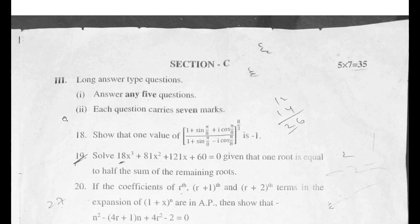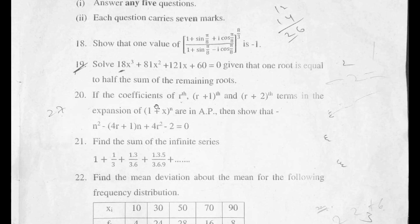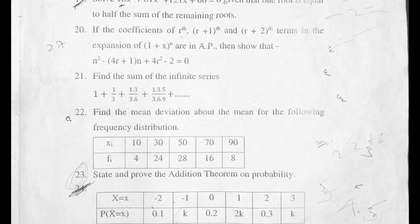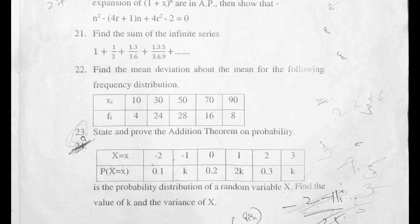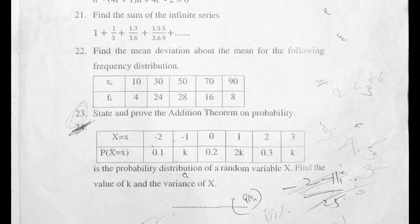Section C has seven LAQs out of which you have to answer any five. The first LAQ is from Chapter 2 De Moivre's Theorem, the second LAQ is from Chapter 4 Theory of Equations. The third and fourth LAQs are from Chapter 6 Binomial Theorem. The fifth LAQ is from Chapter 8 Measures of Dispersion, the sixth LAQ is from Chapter 9 Probability, and the seventh LAQ is from Chapter 10 Random Variables and Probability Distributions.